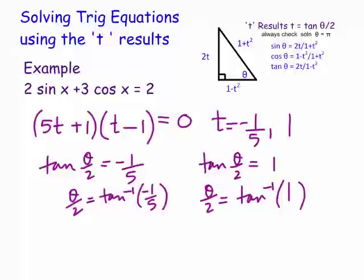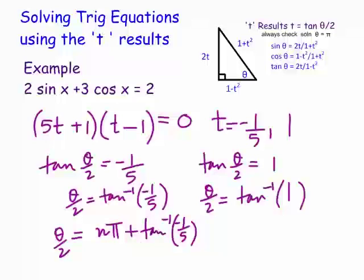We drop into the general solutions. For tan, the general solution is simply nπ plus the angle — you always go forward. So our general solutions for θ/2 would be: θ/2 = nπ + arctan(−1/5), and from the other value: θ/2 = nπ + arctan(1). These are our θ/2 solutions, so we then double everything.